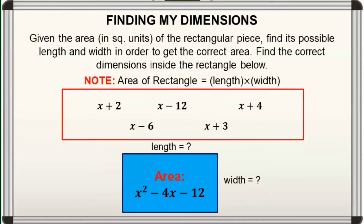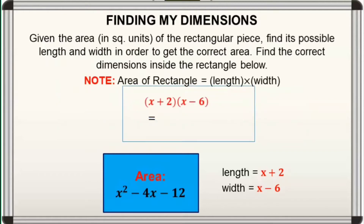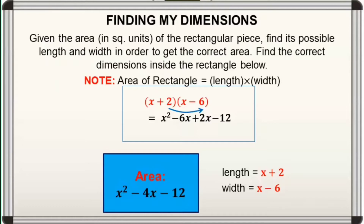For the fourth one — Great! Length is equal to x plus 2 and width is equal to x minus 6. Dahil, pag-mi-multiply natin using the FOIL method: x times x is x squared; x times negative 6 is negative 6x; 2 times x is 2x; and 2 times negative 6 is negative 12. Combining negative 6x and positive 2x, we have negative 4x. So, (x plus 2) times (x minus 6) is equal to x squared minus 4x minus 12.